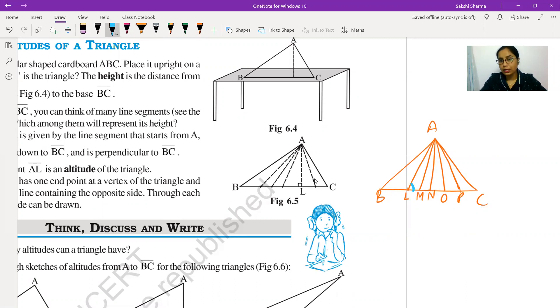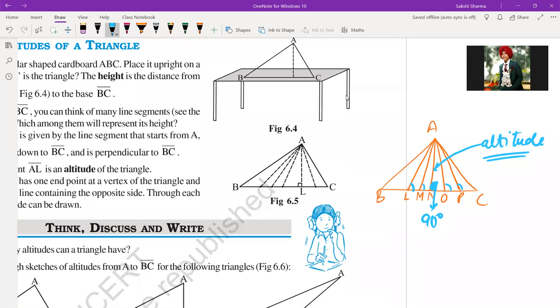Now if I look at all of these line segments, all of these line segments are forming an angle with the opposite side, correct? If there is a line segment whose angle with the opposite side is 90 degrees, suppose I measure all these angles and one angle is 90 degrees, then this line segment is called altitude.